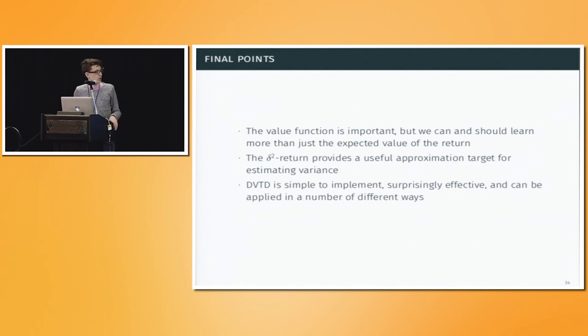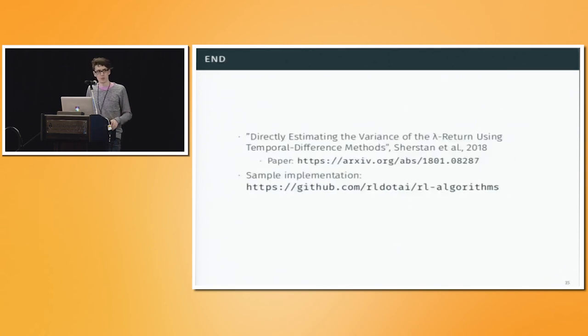And then to summarize overall, the value function is important, but it's not all important. There's other things that you might want to estimate as well. The delta squared return is a useful approximation target, and by using that, we are able to estimate the variance. DVTD, in particular, is a simple algorithm, easy to implement, but it's surprisingly effective, and if you follow the stuff that we discussed in the paper, you'll find that it is flexible and can be used in a number of different applications as well. All right. That's the end of my bit. Does anyone have questions? Thank you.